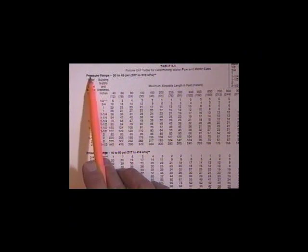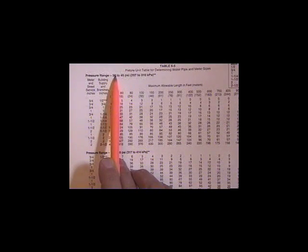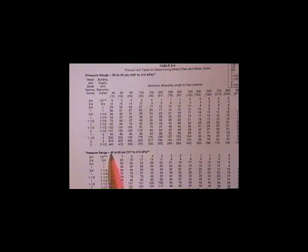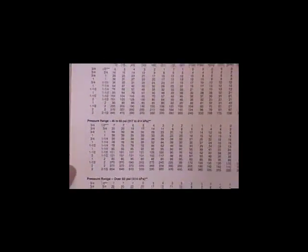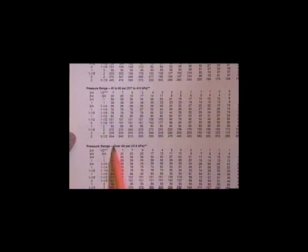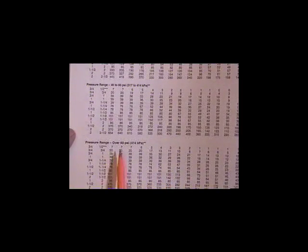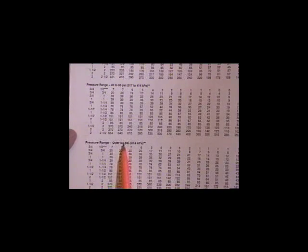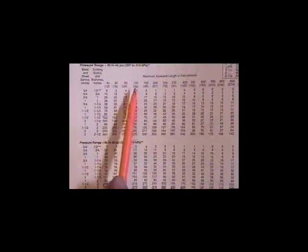Your pressure range is 30 to 45 psi. This one, the pressure range is 45 to 60 psi, and the last one is a pressure range of over 60 psi. You'll recall from our discussion that if we're over 80 psi, we have to put a pressure reducing valve.